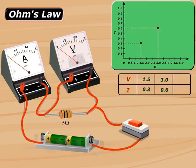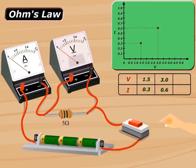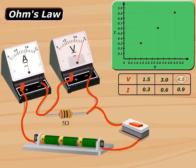Again, on adding one more cell, the potential difference becomes 4.5, whereas the current flowing through the resistor becomes 0.9.